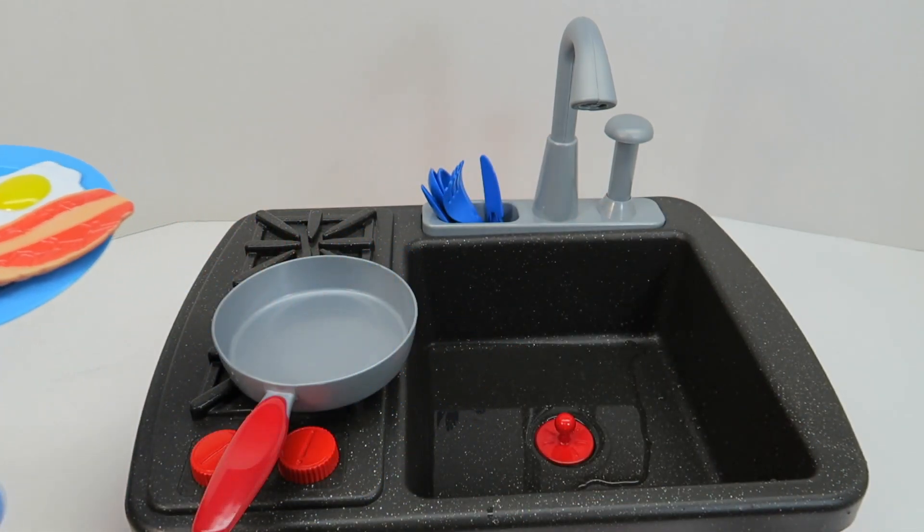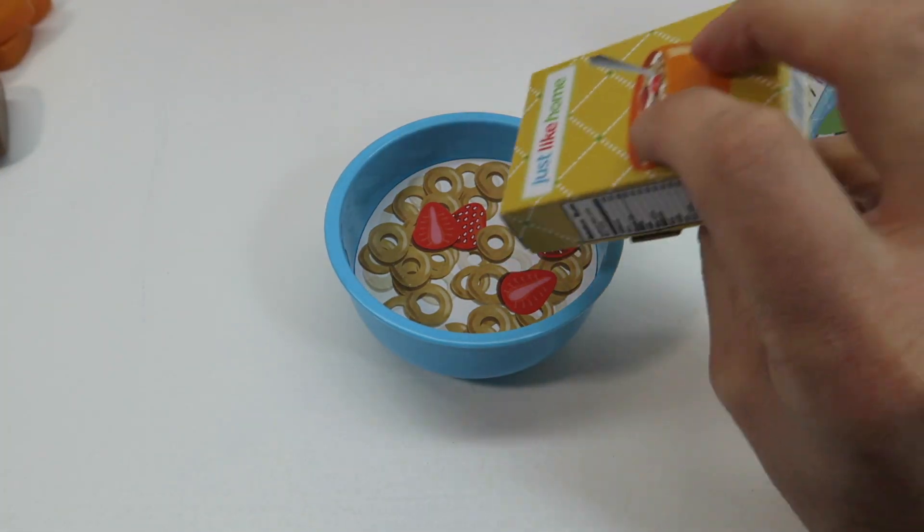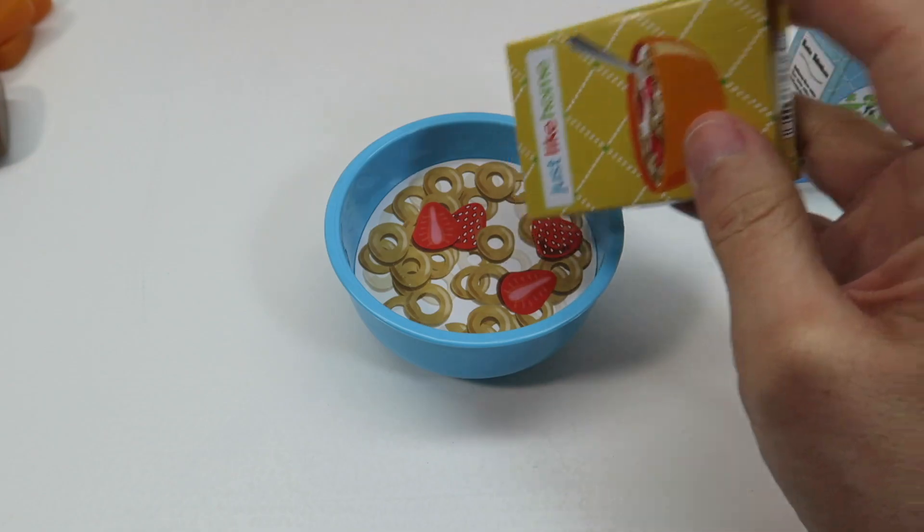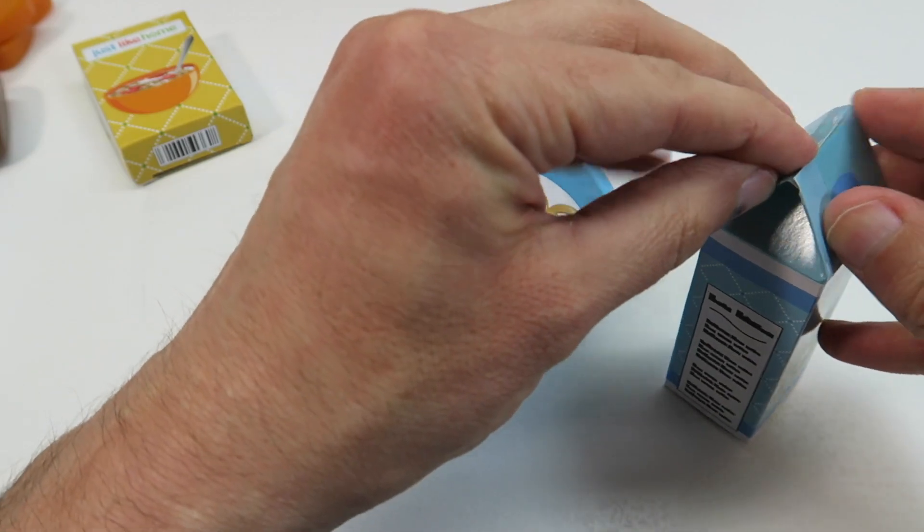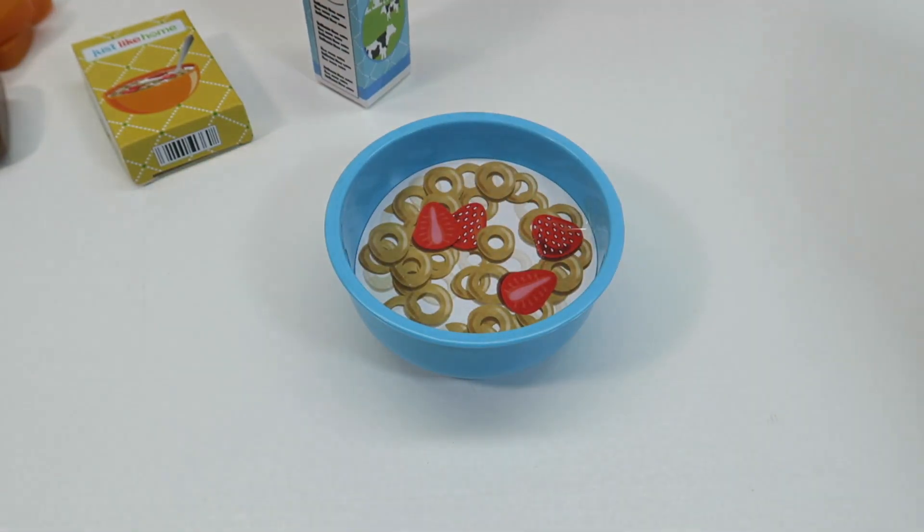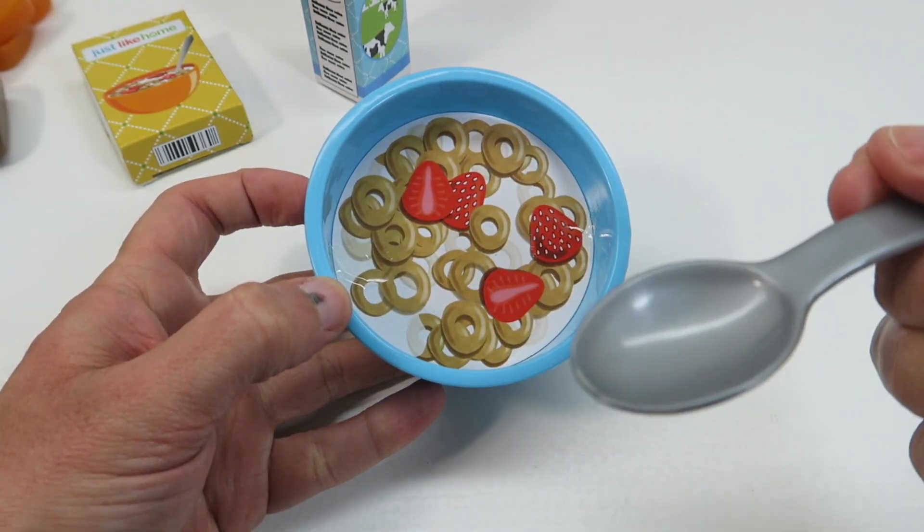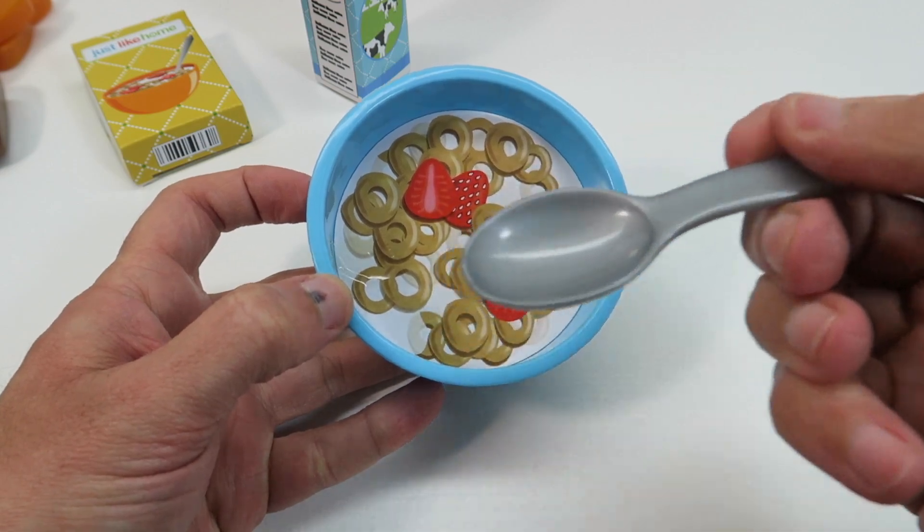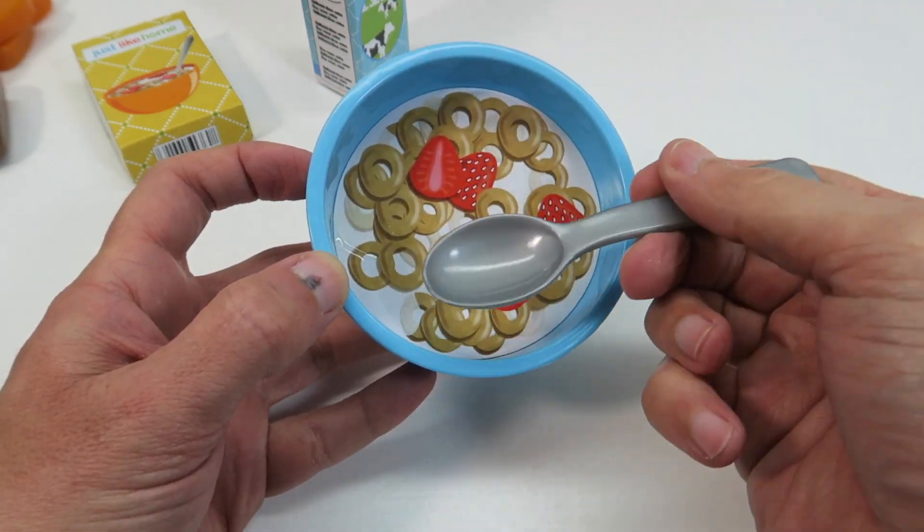So let's pour the cereal now. So we'll pour the cereal here. Okay, now we'll pour the milk. Let's open the milk carton up. And there's your cereal right there. Take a bite. Another bite. You guys want to do airplane? Let's do airplane. Take a bite.